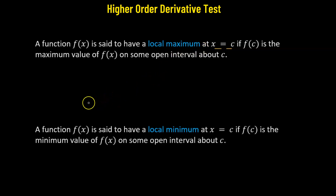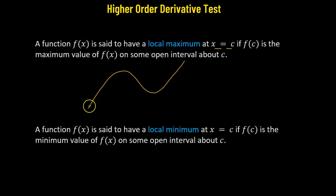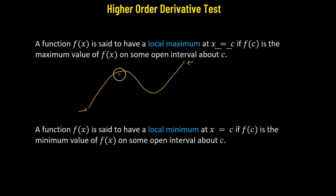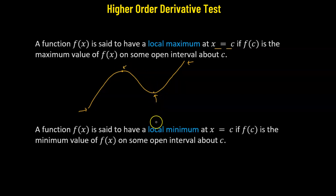For instance, let's say we have a function of a particular form. Although looking at this, we can say this function might have a minimum value here and a maximum value here, but we are only talking about locally. Locally speaking, this function is going to have a maximum value at one point and a minimum value at another particular point.